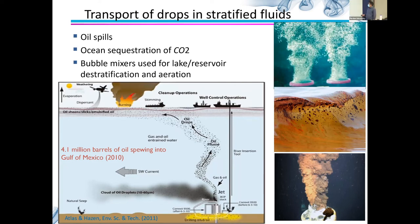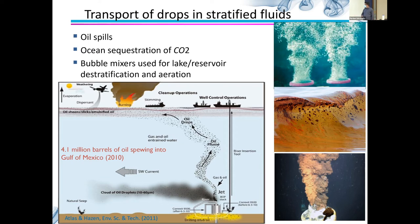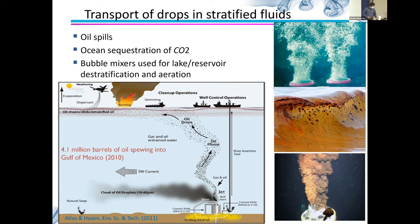Another area is looking at swarms of bubbles and droplets in stratifying environments and the mixing they cause. One motivation is that whenever you have oil at the bottom of the ocean, not all of it gets to the surface — some is trapped in the middle layer because of how the density is balanced between the oil droplets and the water. It's important to predict how much oil actually reaches the surface from what was released. For example, in the Gulf of Mexico oil spill, what reached the surface was much less than what was expected from what came out of the broken pipes at the bottom of the sea.